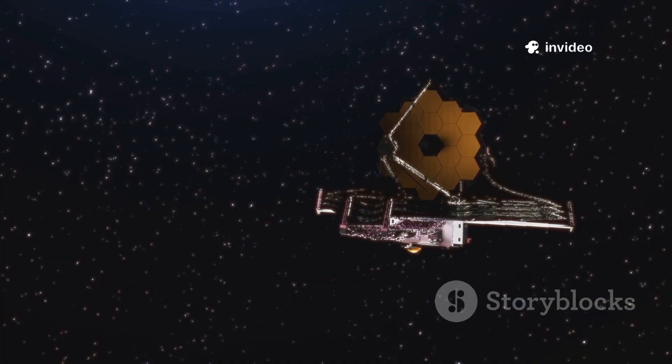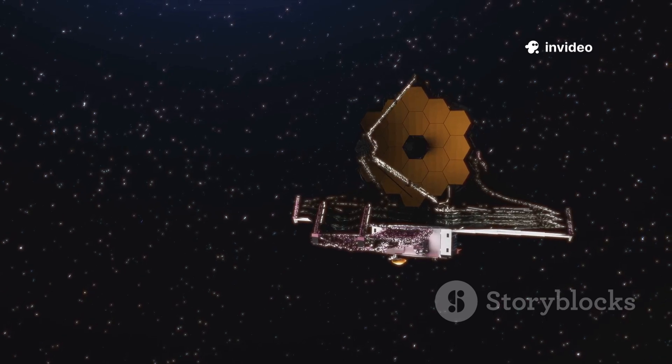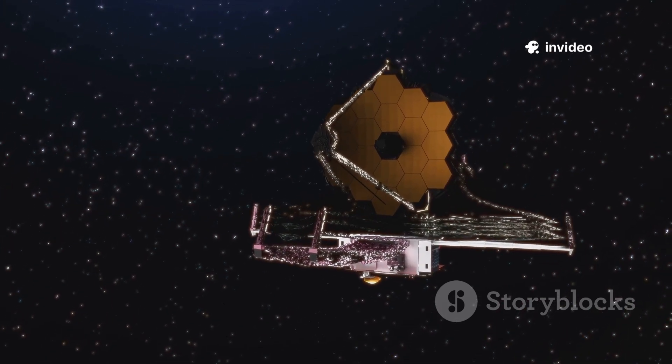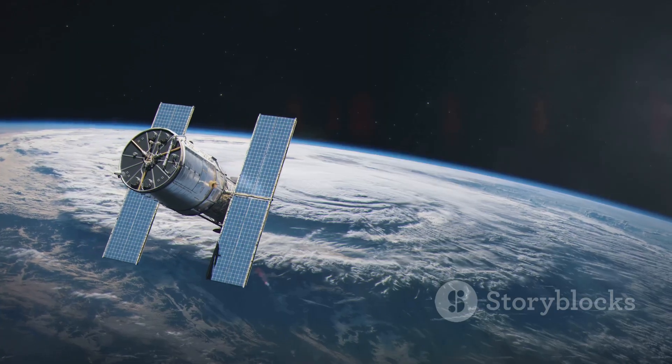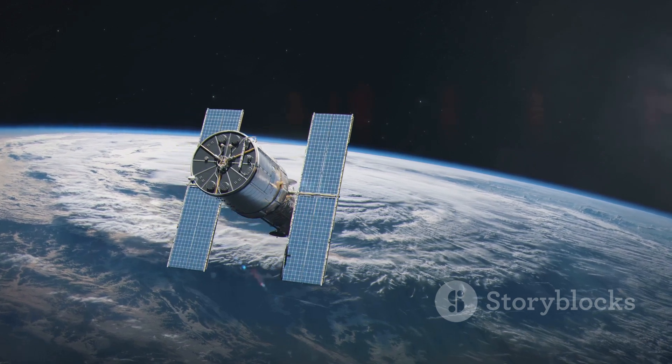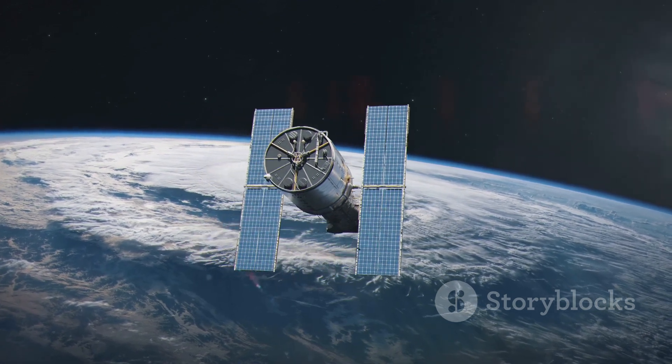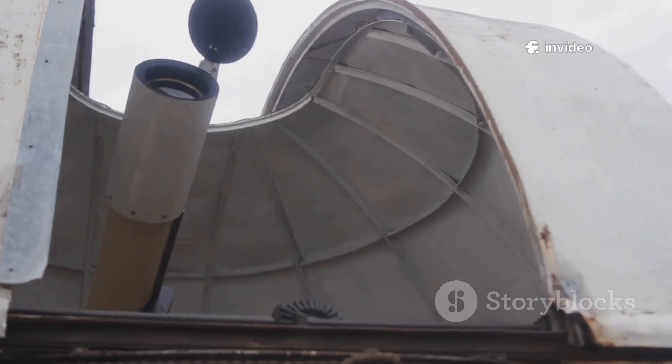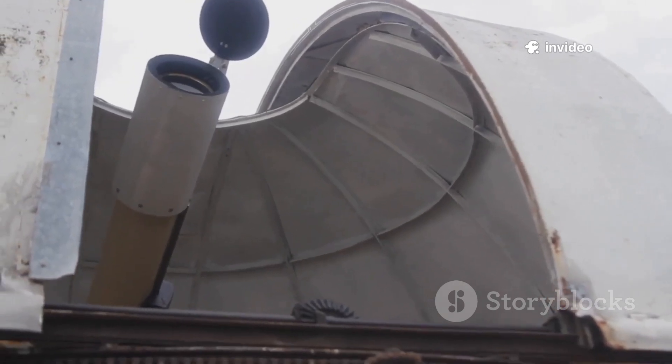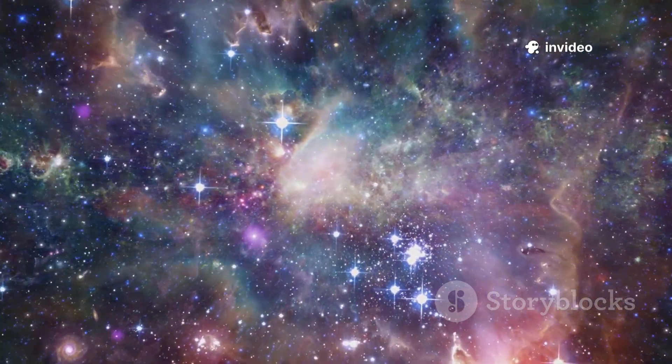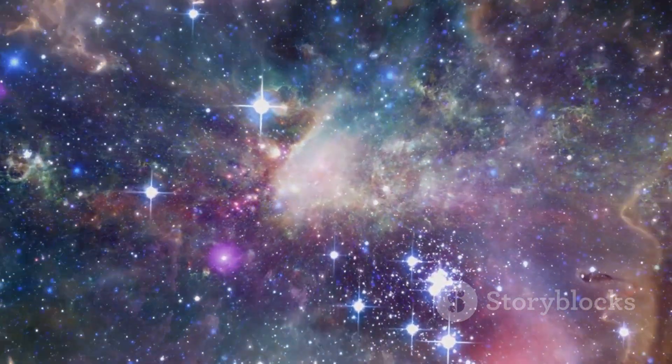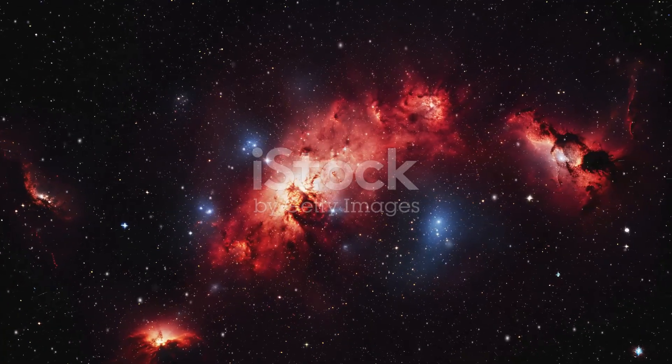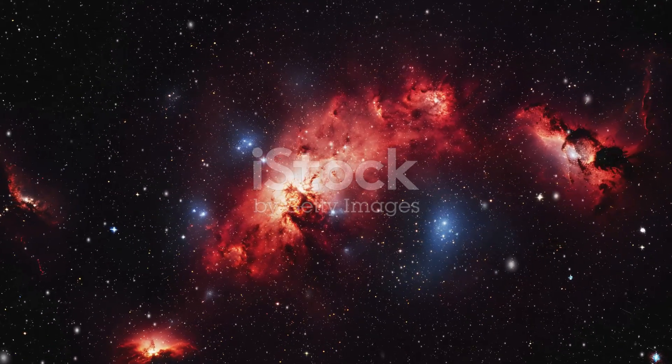Webb orbits a million miles from Earth at L2, always shielded from the sun and Earth's heat. Unlike Hubble, Webb can't be serviced. It had to work perfectly from the start. Its mirror is six and a half metres across, over six times Hubble's light-collecting area. This huge mirror and infrared vision give Webb its unique power. It sees the first, farthest and faintest objects in the universe.